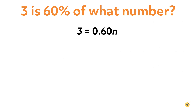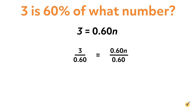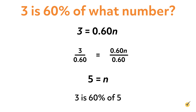From here, solve the equation for n. To solve for n, isolate the variable by doing inverse operations. The opposite of multiplying by 0.60 is dividing by 0.60, so divide both sides of the equation by 0.60. 3 divided by 0.60 equals 5, so write 5 on the left side. 0.60 divided by 0.60 equals 1, so write n on the right side. Therefore, 3 is 60% of 5.